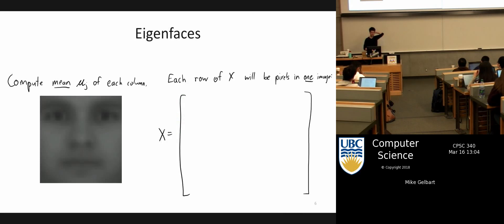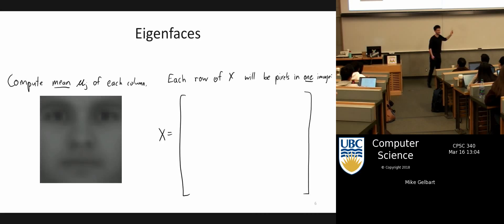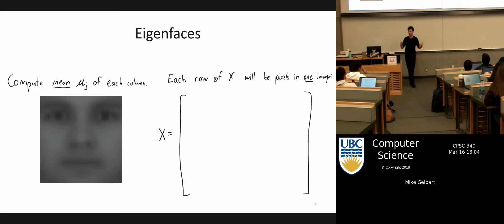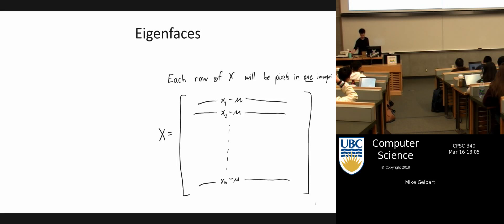What if we run PCA on this dataset? The first thing we need to do is compute the mean. Each training example is a face — a flattened vector. The mean is also a vector of length D, where D is the number of pixels in an image, and then we unflatten it. It looks a little like a face — it looks better from farther back. We then center all our examples by subtracting the mean, just like we always do for PCA.